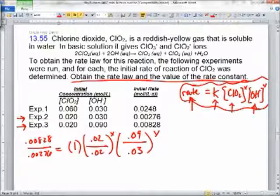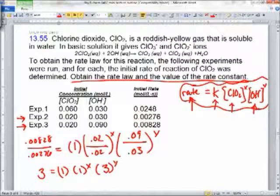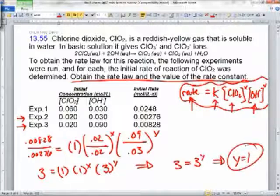Don't forget to raise it to its power. Now we've got to do the math. Let's see. 0.00828 divide it by 0.00276. I got 3. 3 has to equal 1 times 1 to the X times, that should be 3, right? To the Y. So what does this look like? 3 equals 3 to the Y. We've got our Y.